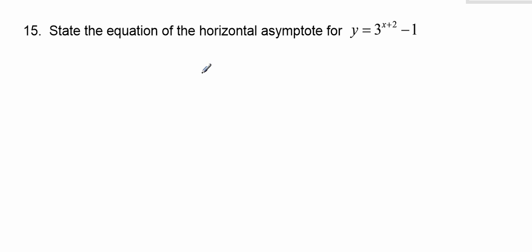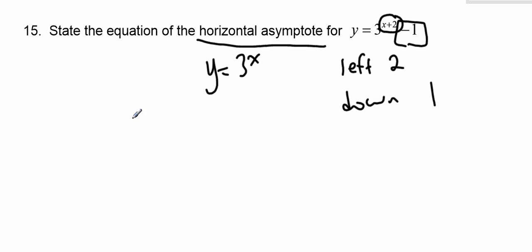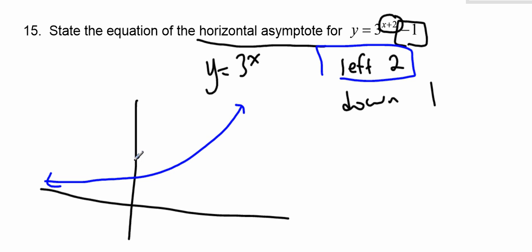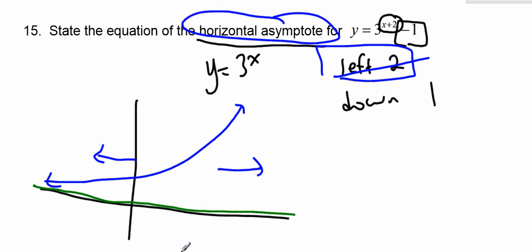State the equation of the horizontal asymptote. So here we have a basic function. Then it is moved to the left by 2, and it's moved down 1. So how would this change the horizontal asymptote? Think about an exponential function. If I move it to the left or to the right, does that change my horizontal asymptote? Not at all. So I don't even worry about what that does. But down 1 is definitely going to change my asymptote, because my asymptote is normally here at y equals 0. But now when I move down 1, the asymptote goes with us. So the asymptote is now at y equals negative 1.